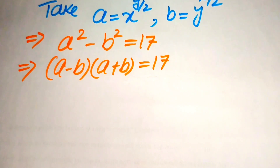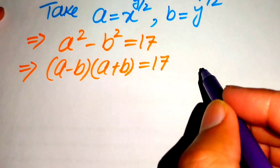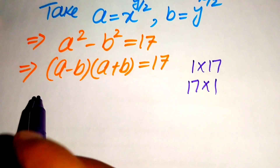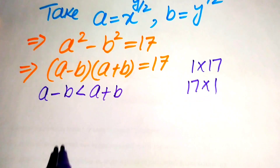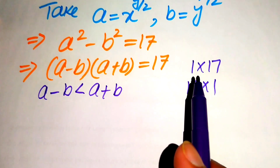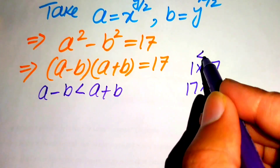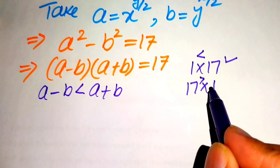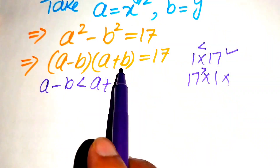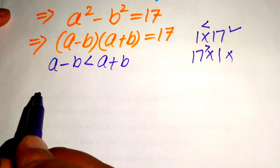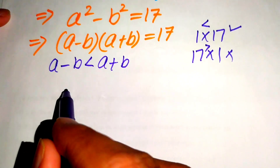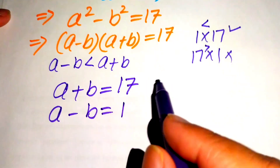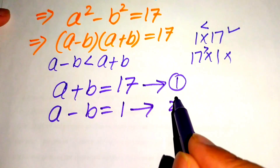Now we make two factors on the right hand side. The factors of 17 are 1 multiplied by 17 and 17 multiplied by 1. We know that a minus b is always less than a plus b, so we choose factors where the first value is lesser than the second. Since 1 is less than 17, we get a plus b equals to 17 as equation 1, and a minus b equals to 1 as equation 2.